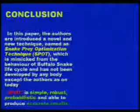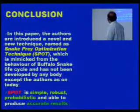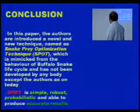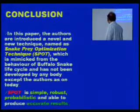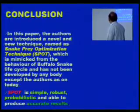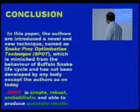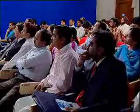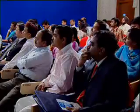As per these results, we can evidently say that SPOT takes very much less time computationally. People want only two things: accuracy and low computational effort. Both are satisfied through our optimization technique. In this paper, the authors have introduced a novel technique named Snake Prey Optimization Technique — SPOT — which is mimicked from the behavior of the buffalo snake life cycle, and has not been developed by anyone else as of today.